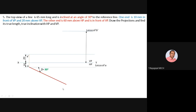Beta equals 30 degrees and the top view length is 65 mm. With this you can easily fix the locus of B at the end of the top view line. At the end of this 65 mm line drawn at 30 degrees, you can fix locus of B.